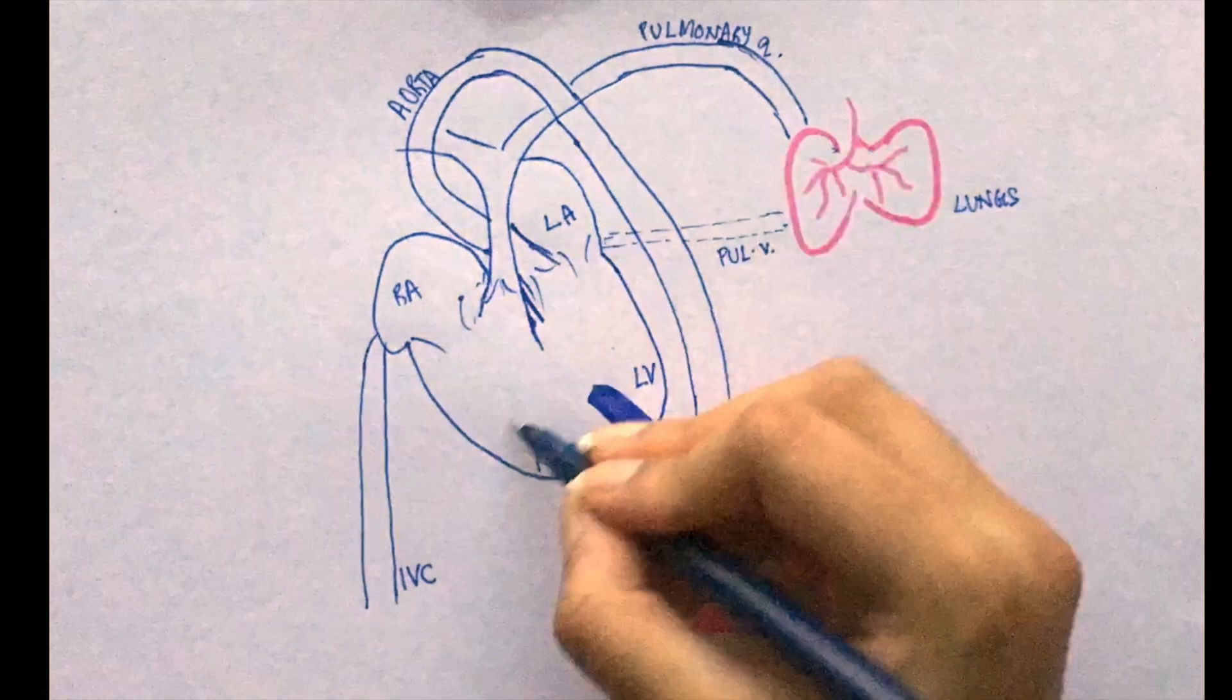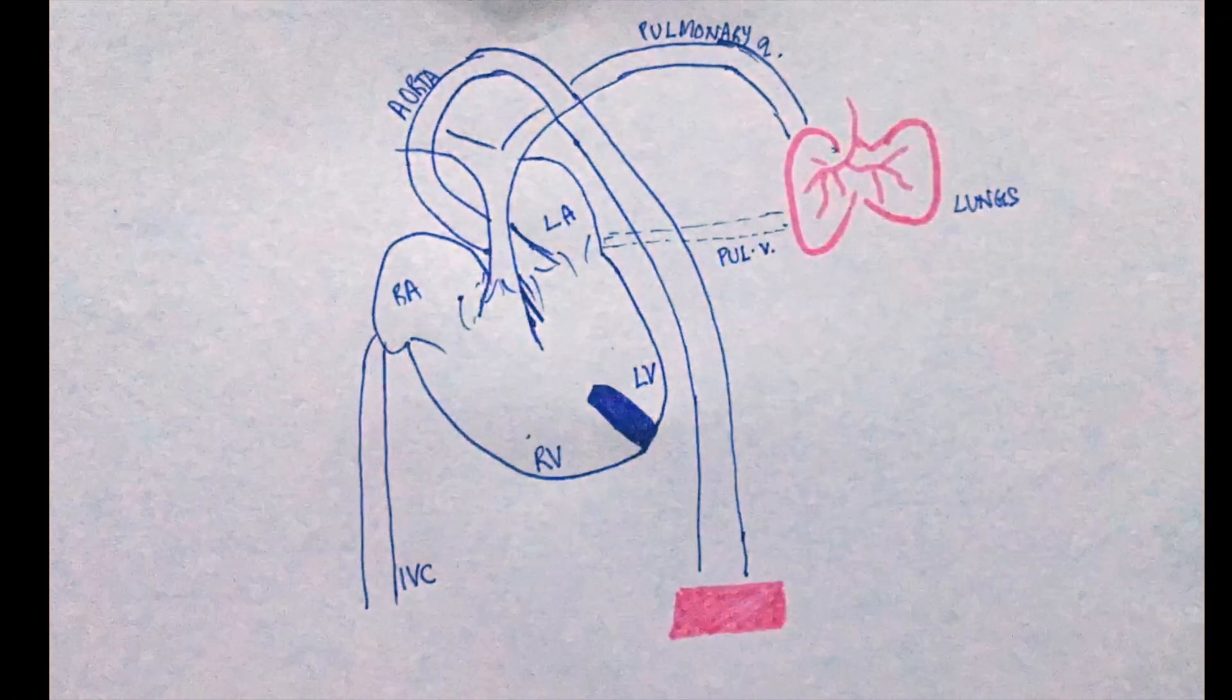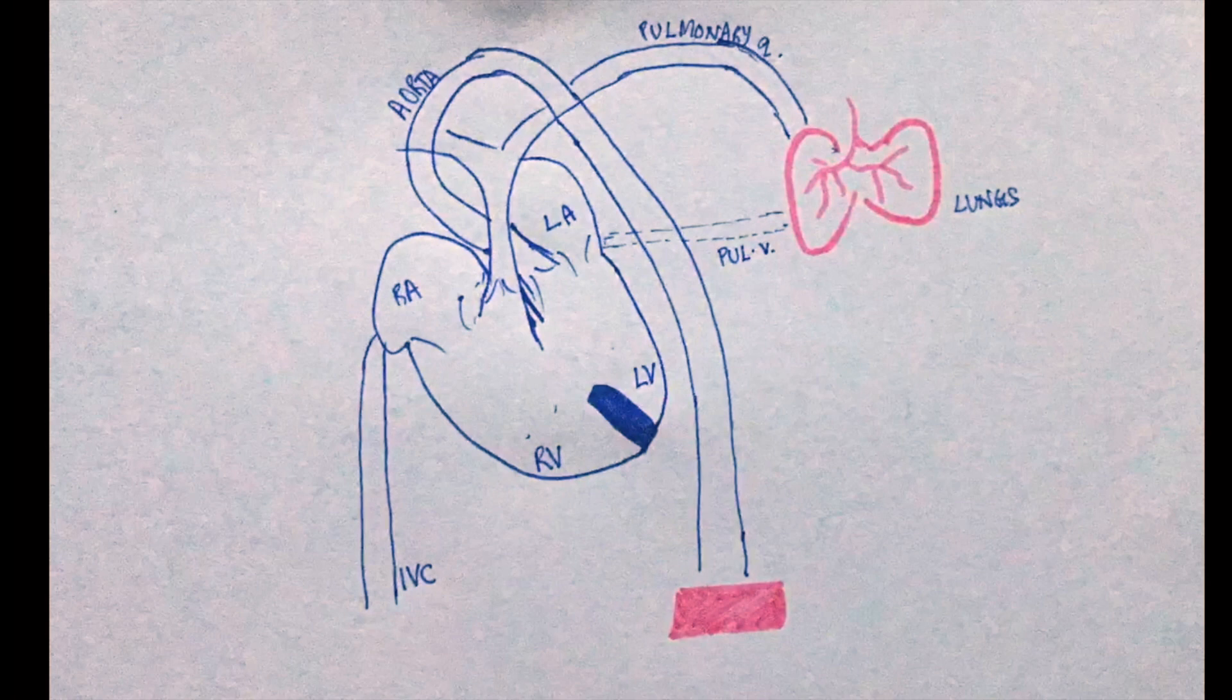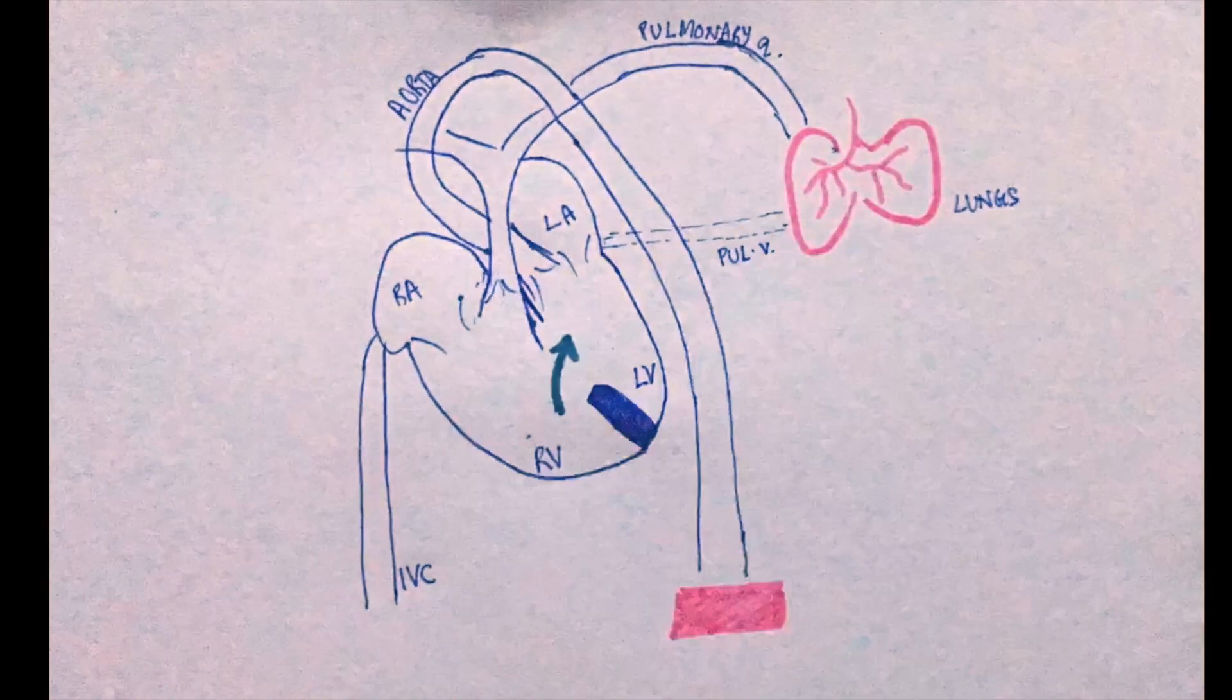narrower the outflow tract, greater is the pressure built up here. This causes more blood to get shunted through the VSD, increasing the cyanosis.